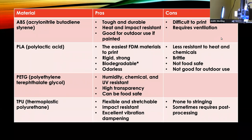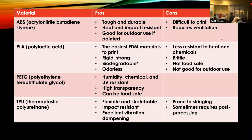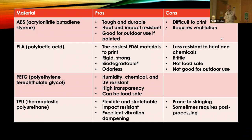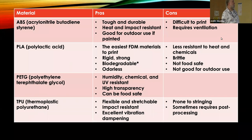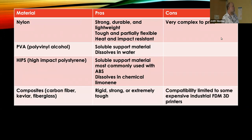TPU is the other most common material — it's flexible, and comes in all sorts of different degrees of flexibility. You can use it to print vibration isolators, hinges, anything that needs to be a little bit squishy. It's pretty cool stuff.